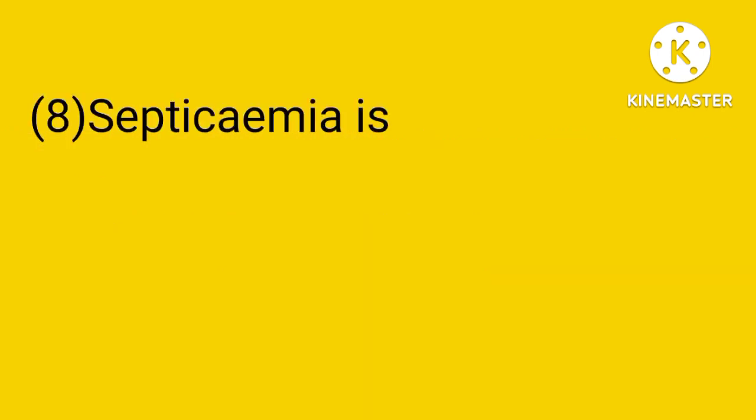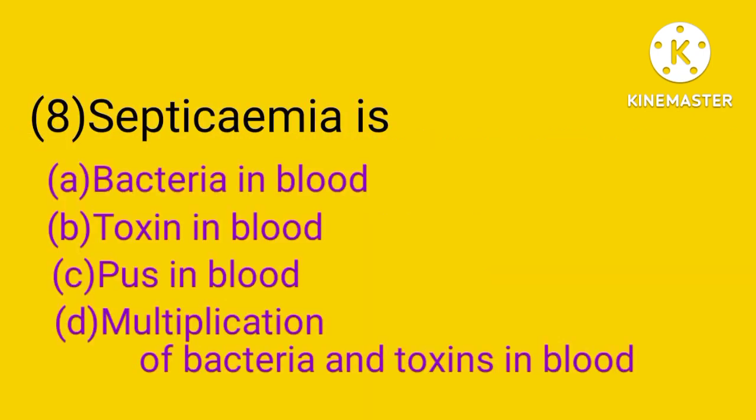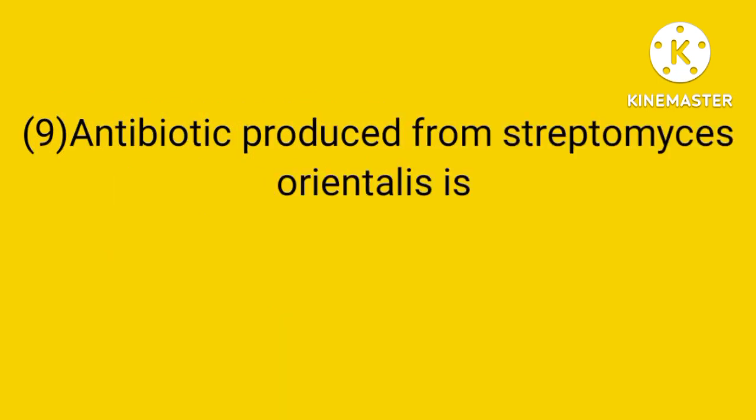Question number 8. Septicemia is: bacteria in blood, toxin in blood, pores in blood, or multiplication of bacteria and toxin in blood. The answer is D. Septicemia is the multiplication of bacteria and toxins in blood.